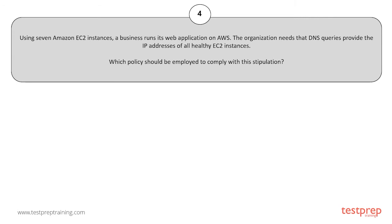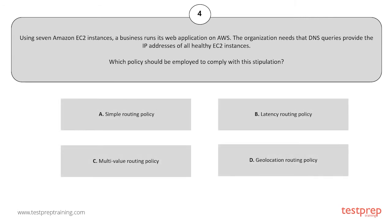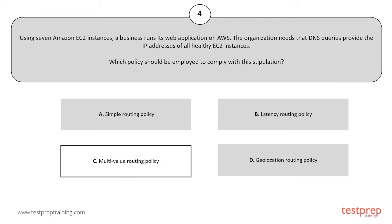Your options are: A. Simple routing policy. B. Latency routing policy. C. Multivalue routing policy. D. (option not provided). The correct answer is option C.